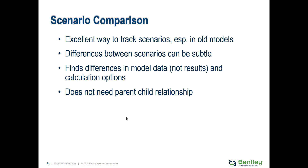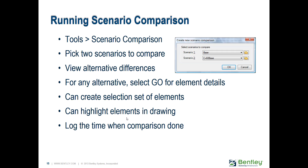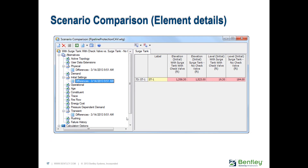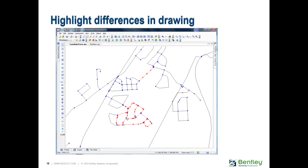There's also a scenario comparison tool that can easily track what's different between scenarios. If you're setting up a lot of scenarios and aren't sure what's different between them, you can refer to that tool. You pick two scenarios and it shows you which alternatives are different, and you can do a further analysis to see what specific properties differ. For example, it can highlight a surge tank with a different initial elevation. There's also an ability to highlight the differences in the drawing — a plan view where the elements that are different are highlighted — which is really useful if you start to lose track of what you did in each scenario.